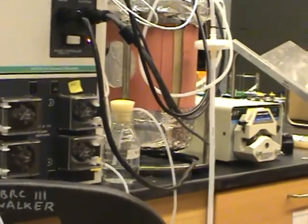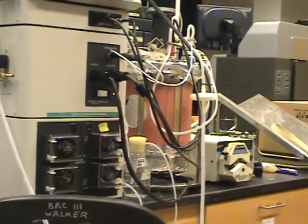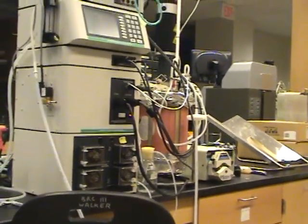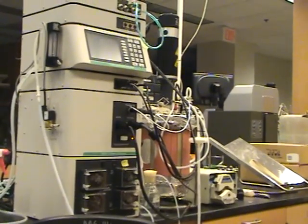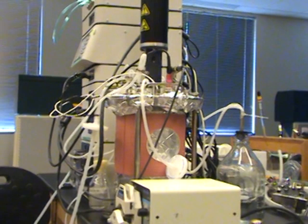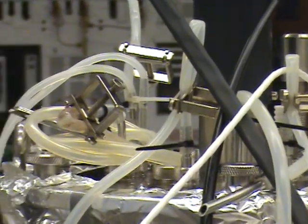The bioreactor is assembled and covered with foil to keep out light. The tubes are removed and the whole system is autoclaved or sterilized at 121 degrees Celsius. After autoclaving, the probes are reattached and the agitator is reassembled.